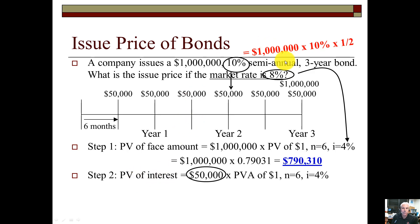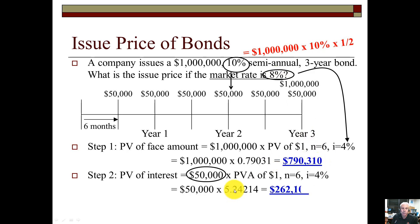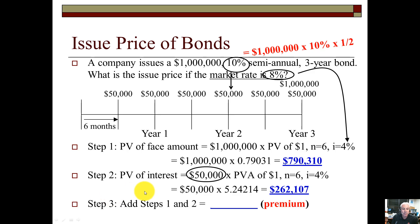In Step 2, we present value the coupon payments. Using principal times the coupon rate times 1/2 gives us $50,000 — note we use the coupon rate here, not the market rate. The subtype is an annuity. Again, for the same n=6 and market rate divided by 2 = 4%, we look up the present value of an annuity table for 6 periods at 4% and get 5.2414, giving us $262,107. In Step 3, we simply add Step 1 and Step 2 together to get the issue price of the bond — $1,052,417 — which is higher than the face value, meaning this is a premium bond.